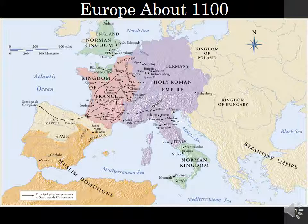Looking at this map we see various kingdoms highlighted: Muslim Dominions in North Africa and into Spain, the Kingdom of France as a formidable union, and the Holy Roman Empire — roughly modern-day Germany extending down into the Italian peninsula. Rome at this time is the head of the Roman Catholic Church, and that religious organization holds great sway as the preeminent religious power in Western Europe.